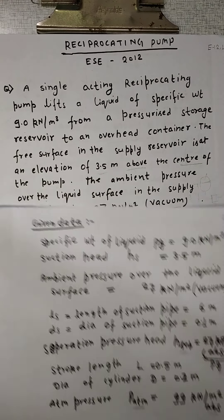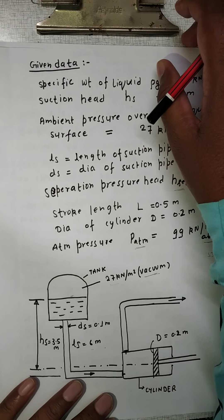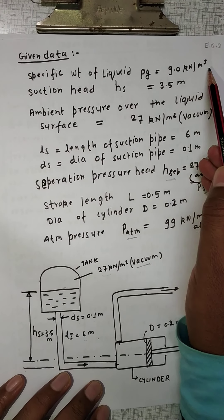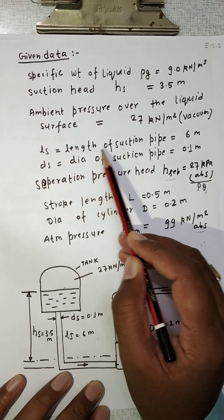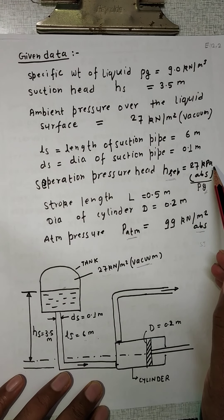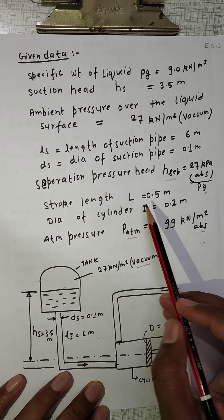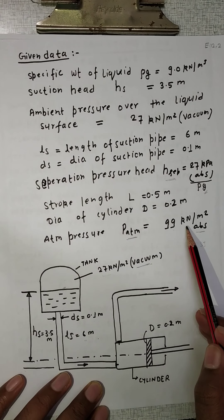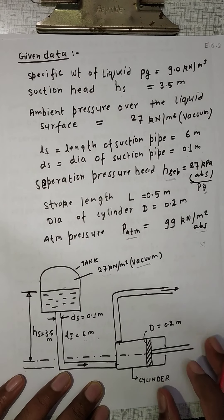The given data: specific weight of the liquid, rho g = 9 kN per meter cube; suction head = 3.5 meters; ambient pressure over the liquid surface = 27 kN per meter square vacuum; length of suction pipe ls = 6 meters; diameter of suction pipe ds = 0.1 meters; separation pressure head h_sep = 27 kPa absolute. Dividing by rho g will convert to meters. Stroke length l = 0.5 meters, diameter of cylinder = 0.2 meters, and atmospheric pressure = 99 kN per meter square absolute.